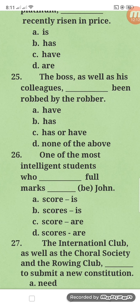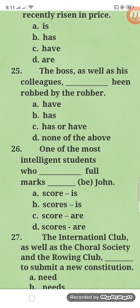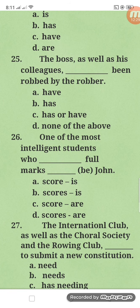Number twenty-five: the boss as well as his colleagues blank. 'As well as his colleagues' is just an intervening phrase and does not affect subject-verb agreement. The subject is 'the boss,' which is singular, so it takes singular verb: has been robbed by the robber — letter B.